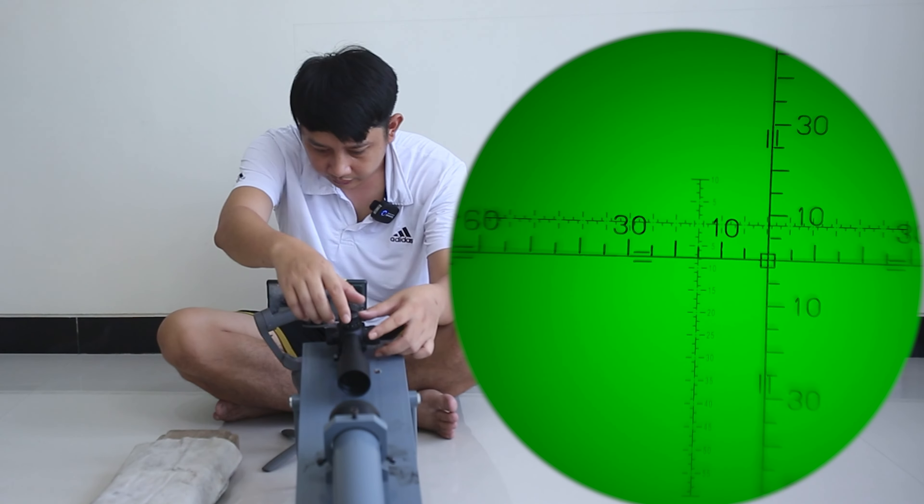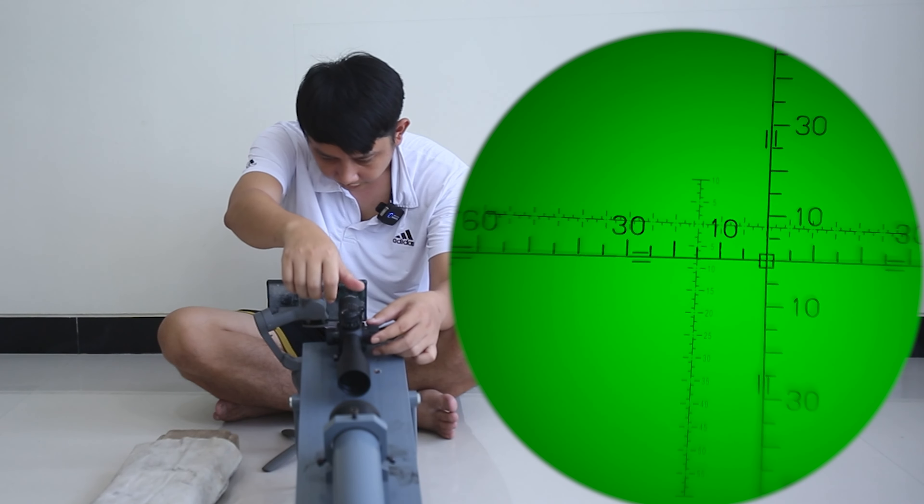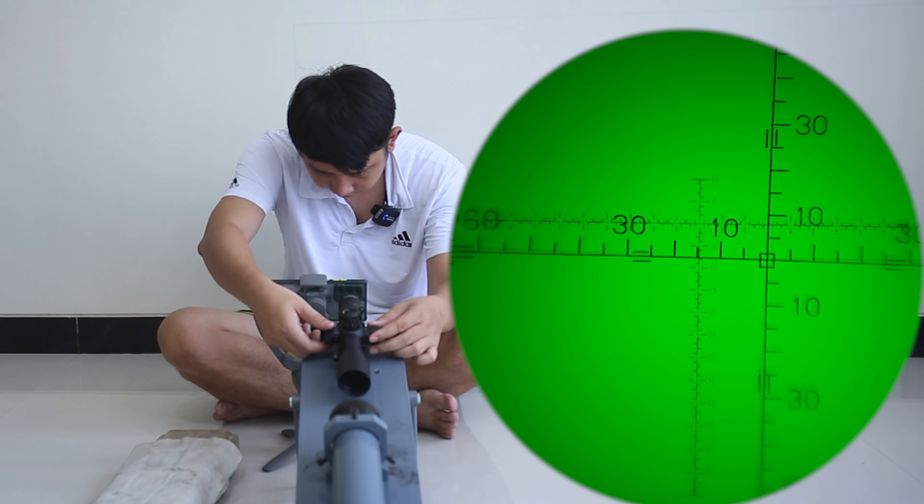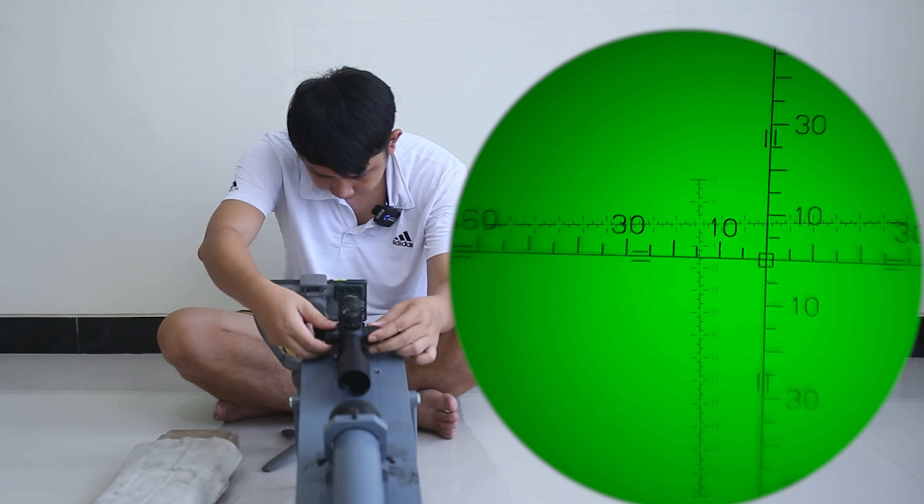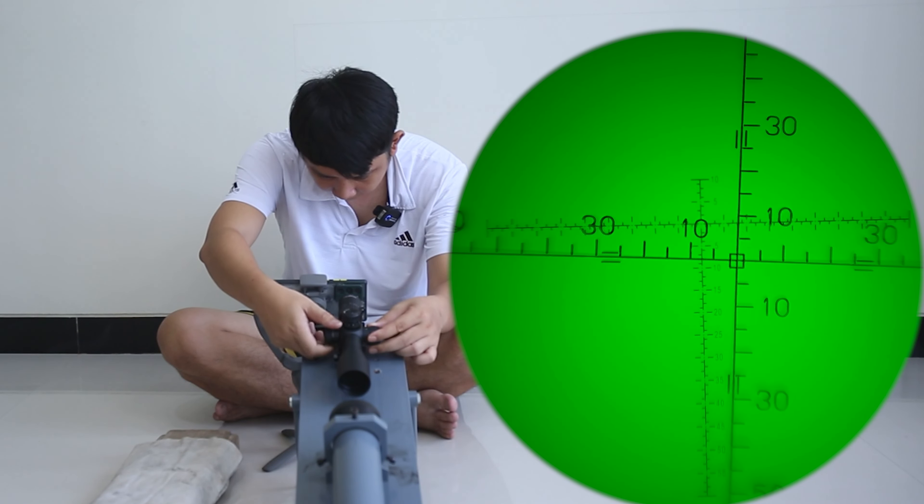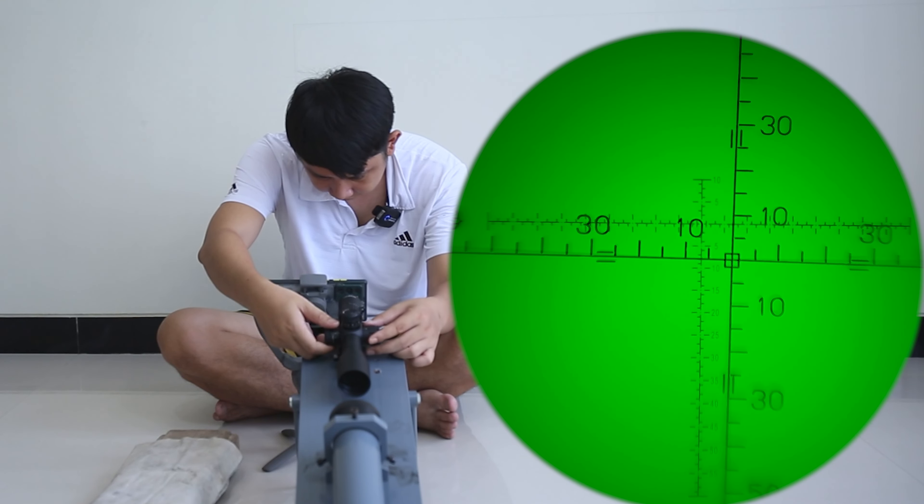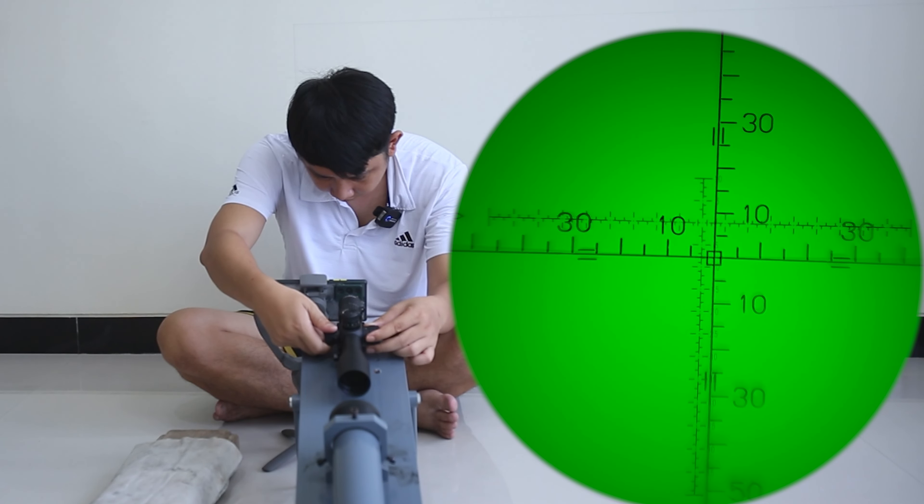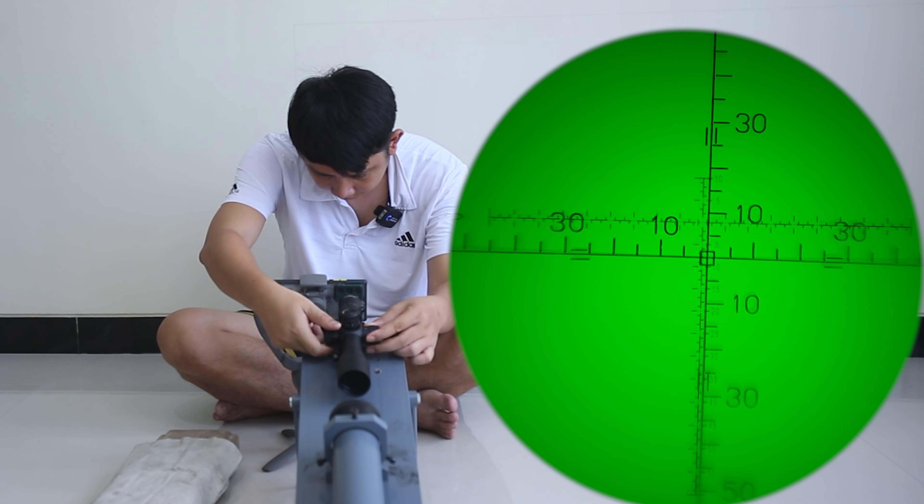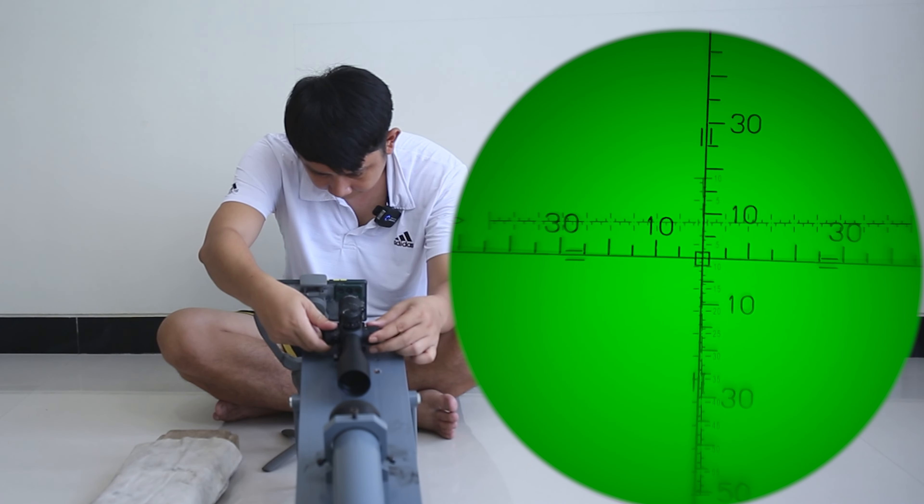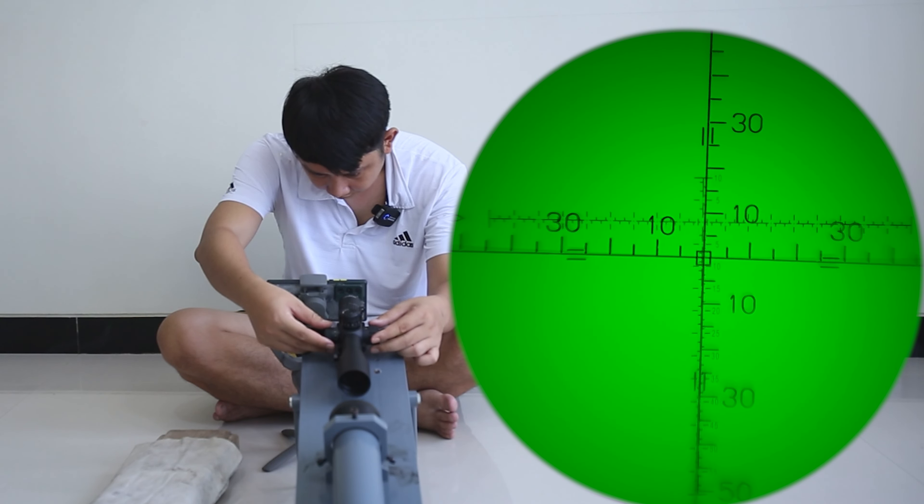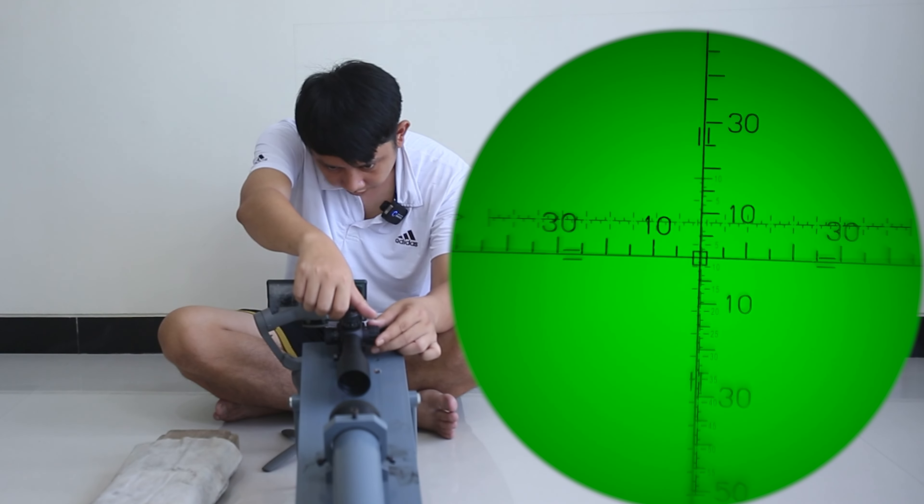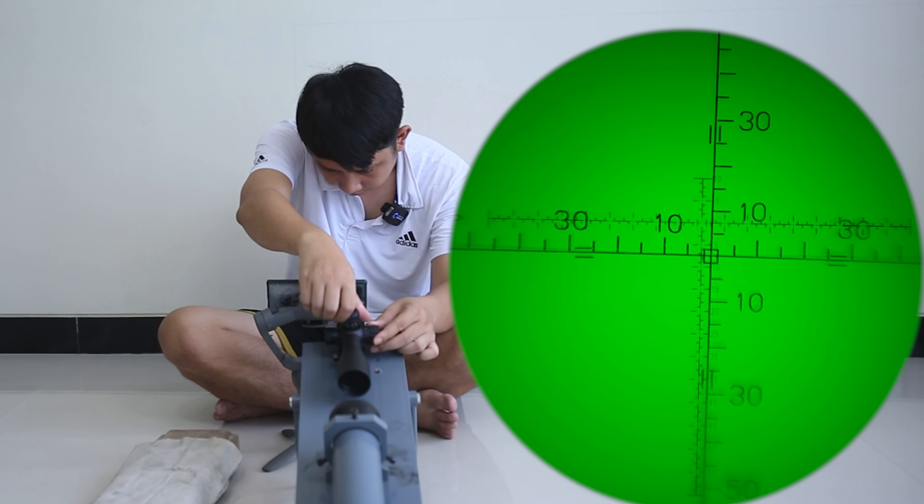Oke sekarang kita zero yang dulu. Kita zero ya, unlock dulu kiri kanan, setelah itu kita zero. Enak banget turret nya. Ini ya, kalau teman-teman pengen tahu ada pergeseran pada turret ketika kita mengutarnya. Sudah sejajar, tinggal kita turunkan saja.